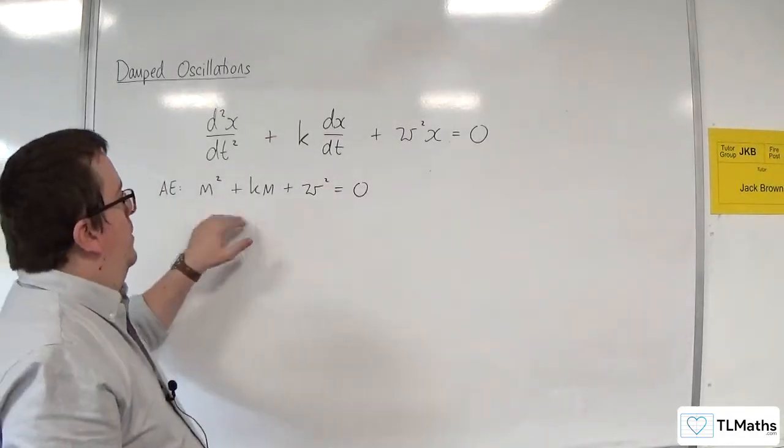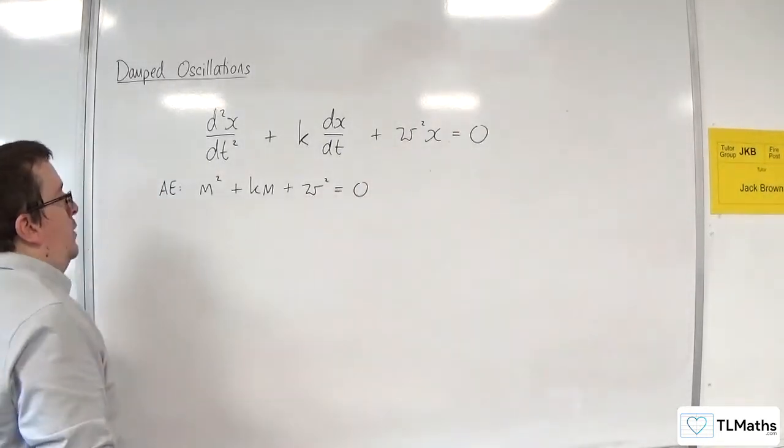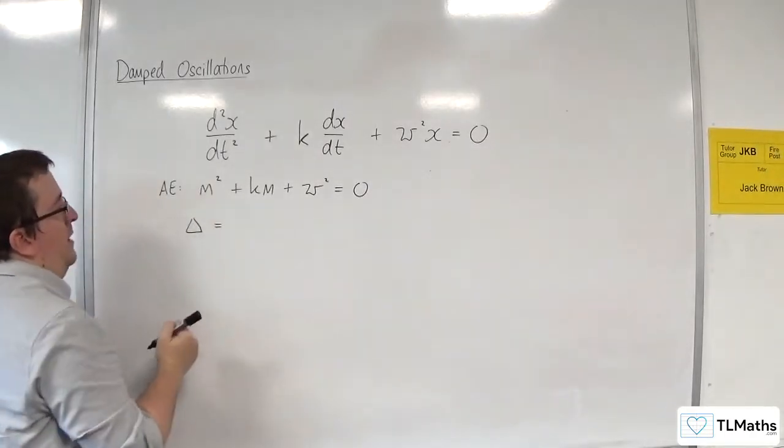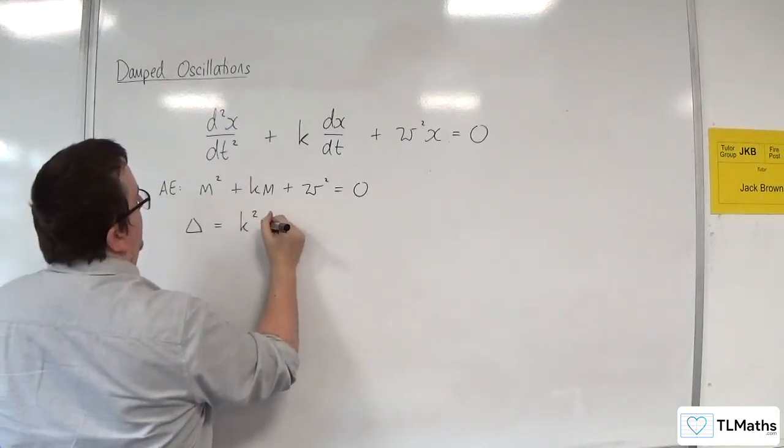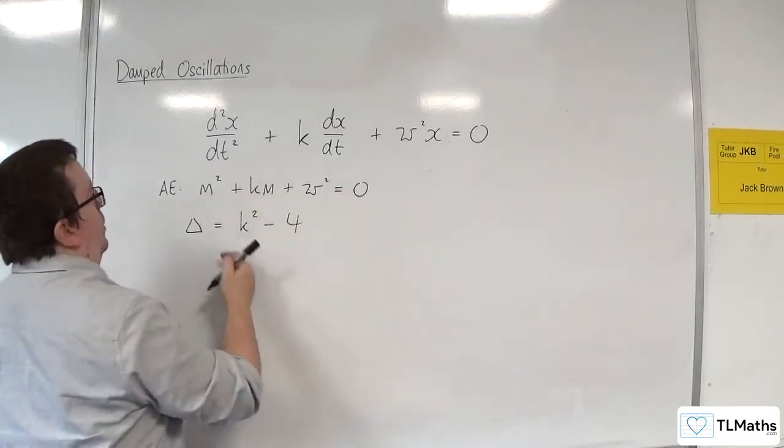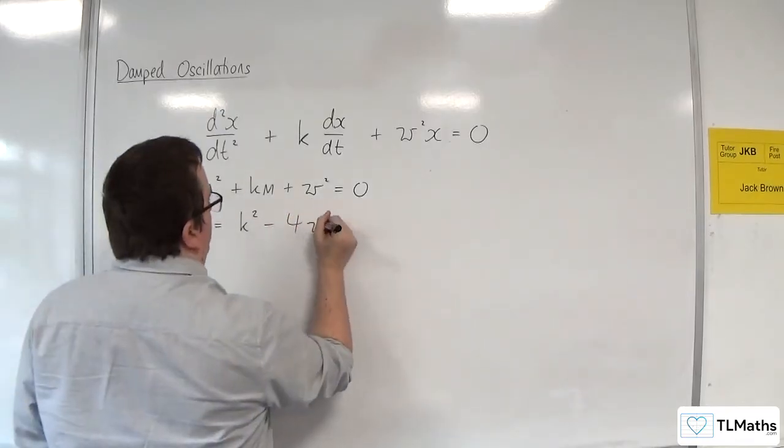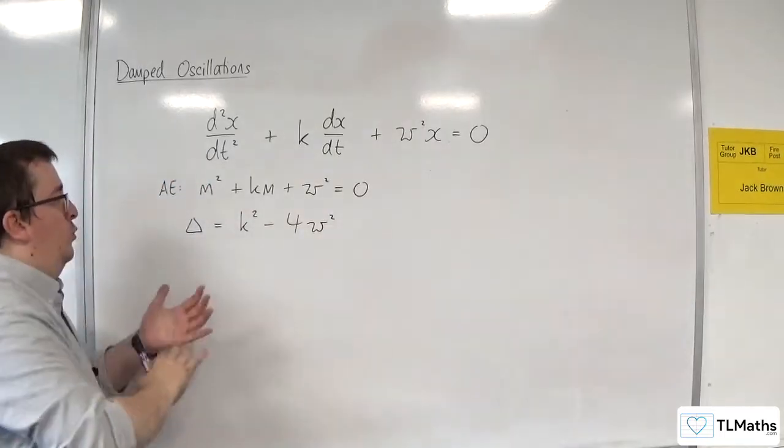Now, when you do that and you consider this quadratic, if you look at the discriminant for this, the discriminant b² minus 4ac would be k² take away 4ω². So this is your discriminant.